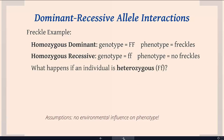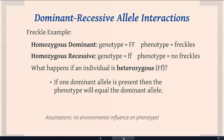So the question is: what happens if an individual is heterozygous — big F, little f? It turns out that if one dominant allele is present, the phenotype will equal the dominant allele. So in this case, the big F is going to override the little f in the phenotype. Even though they are in equal numbers, we're going to see the big F, so an individual with a big F, little f genotype will have freckles.